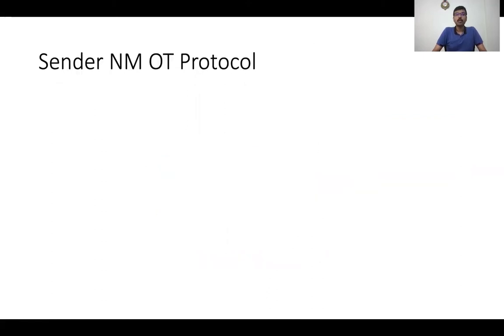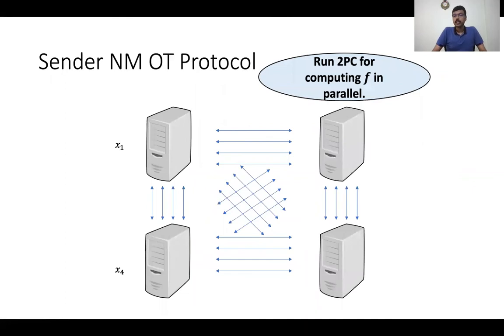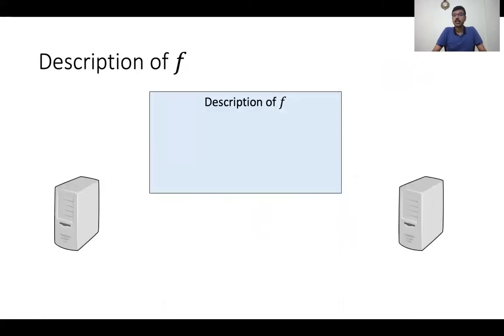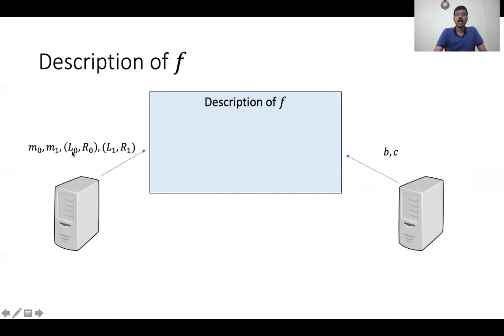Let's see how non-malleable codes help in constructing a sender non-malleable OT protocol. To construct a sender non-malleable OT, we use the same template as before, but instead of running the OT protocol in parallel, we run a two-party computation protocol for computing a special function F in parallel. This function F is a two-party function between a sender on the left and a receiver on the right. The sender inputs consist of strings M0, M1, an encoding (L0, R0), and another encoding (L1, R1) using the non-malleable code. The receiver inputs consist of a bit B — the choice bit for OT — and another bit C.